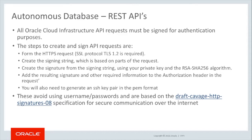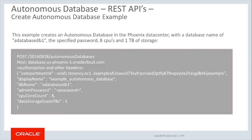You will also need to generate an SSH key pair in the PEM format. This example creates an Autonomous Database in the Phoenix Data Center with the database name ADA-TAB-ASC-DB1, the specified password, eight CPUs, and one terabyte of storage.